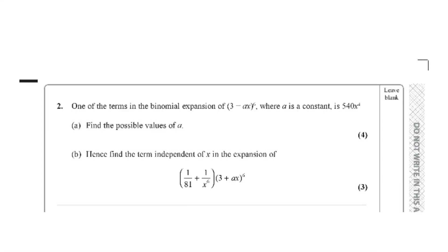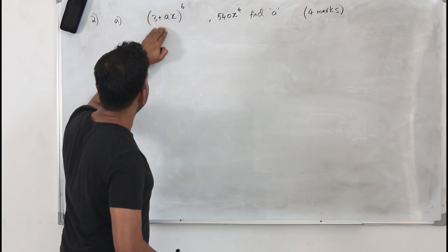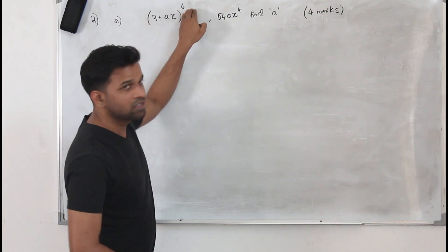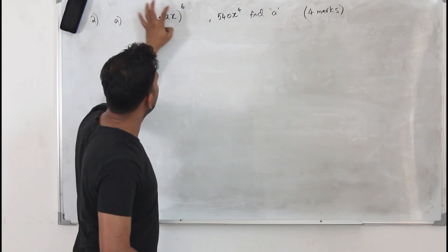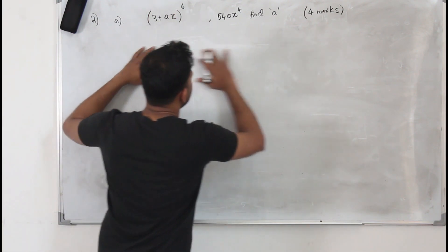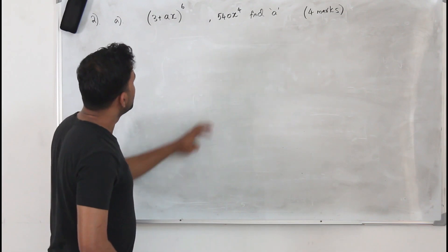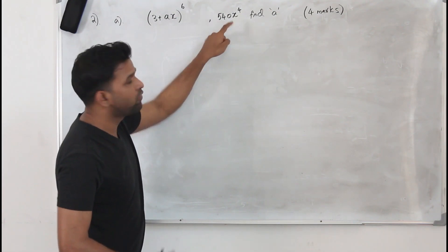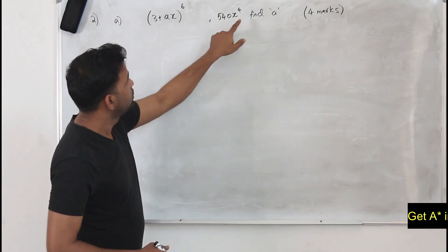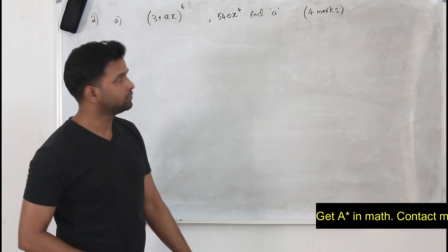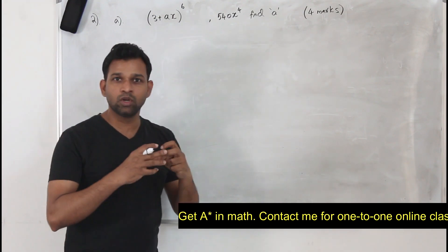Question number two: one of the terms in the binomial expansion of (3 + ax)^6, where a is a constant, is given as 540x^4. Part a: find the possible values of a. You are given (3 + ax)^6, and one of the terms when you expand this using binomial expansion is 540x^4.